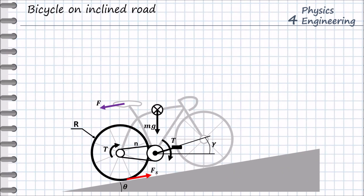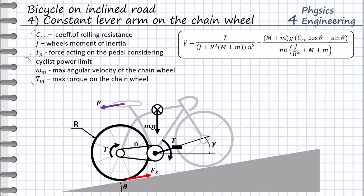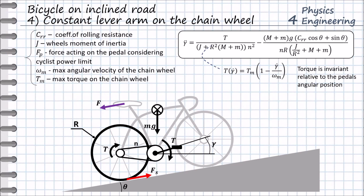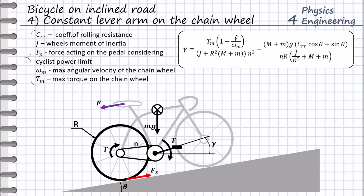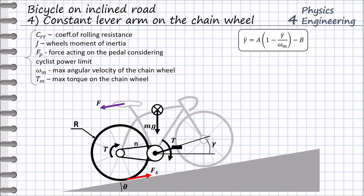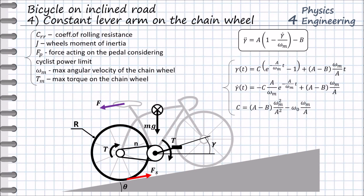Now we consider the condition for professional riders who have feet fixations on the pedal. This means that the torque on the chain wheel will have a constant lever arm. With this consideration, the torque has no dependency on the angular position of the pedals, and the equation of motion has a simplified form. Same as the previous method, we set a torque limit to obtain reasonable power values for the cyclist. We define the following constants, and the equation of motion is further simplified. This equation now has a mathematical solution.